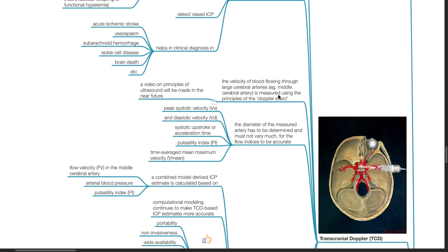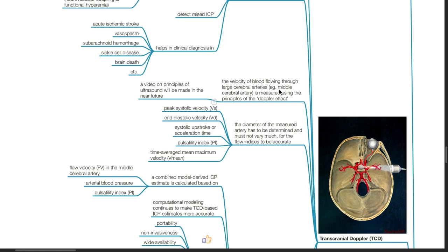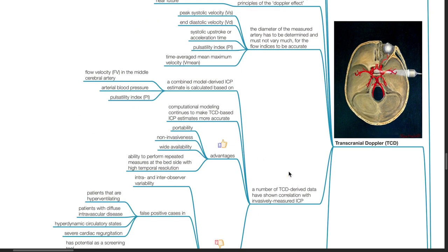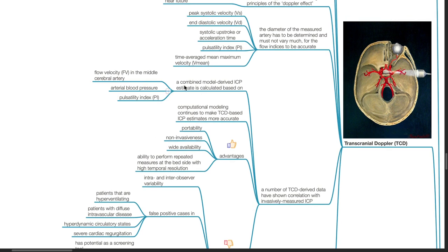The velocity of blood flow through large cerebral arteries such as the middle cerebral artery is measured using the principles of the Doppler effect. The diameter of the measured artery has to be determined and must not vary much for the flow indices to be accurate. Flow indices are derived such as peak systolic velocity and diastolic velocity, systolic upstroke or acceleration time, pulsatility index, and time average mean maximum velocity.